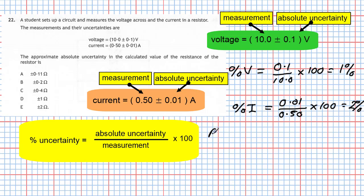What is the value of the resistance from the data? I can use the formula: resistance equals voltage divided by current. That equals 10.0 divided by 0.50, which gives 20 ohms. So the value of the resistor is 20 ohms.